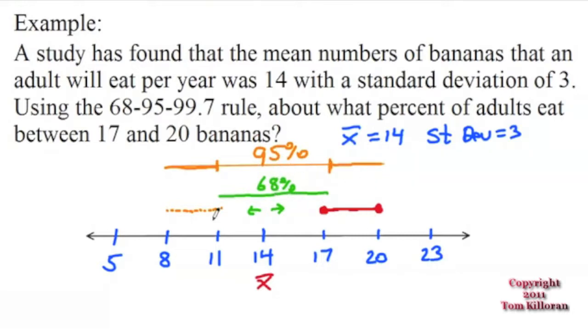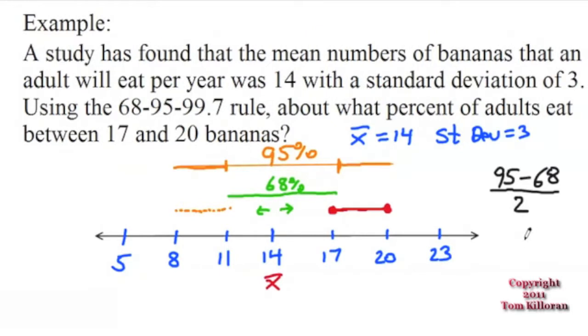So what I'm going to do is I'm going to subtract these two numbers. So I'm going to take 95, I'm going to subtract 68, and I'm going to take my answer and divide by 2. And this tells us that there are 13.5% of adults that would eat about 17 to 20 bananas per year.